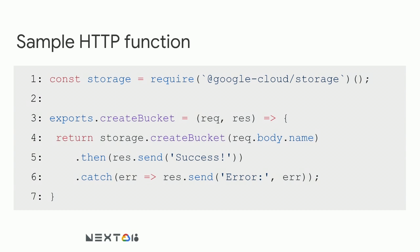Here we have a sample HTTP Google Cloud Function — a straightforward function that creates a bucket when given a name parameter through a POST request. It takes the POST request, attempts to create the bucket on line four using the storage.createBucket function. If that process fails, it sends back an error message; if it succeeds, it sends back a success message.